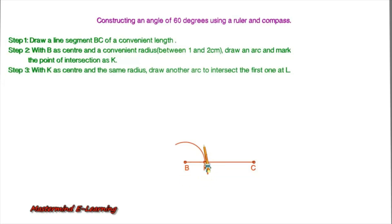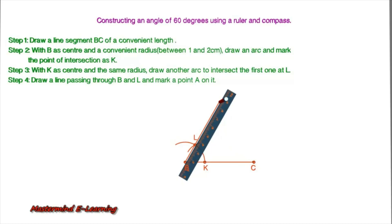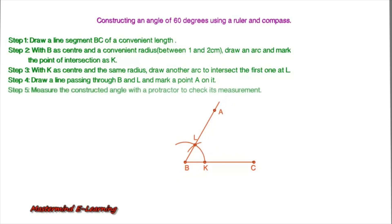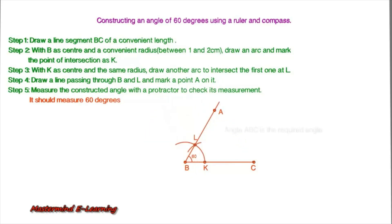With K as center and the same radius, draw another arc to intersect the first one at L. Draw a line passing through B and L and mark a point A on it. Our angle is ready. Now measure the constructed angle with a protractor to check its measurement — it should measure 60 degrees. Angle ABC is the required angle.